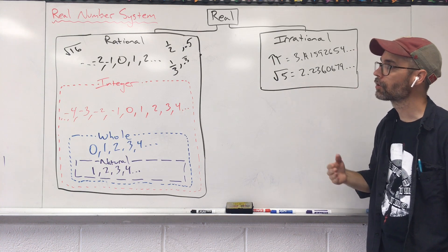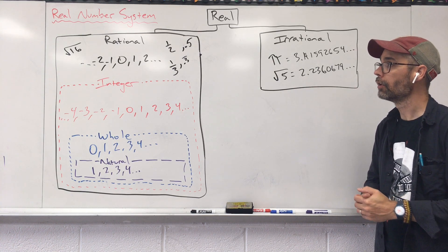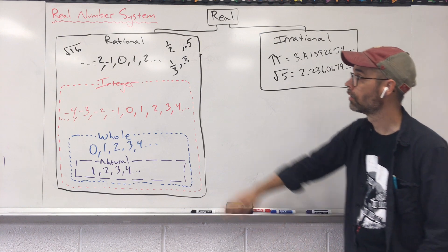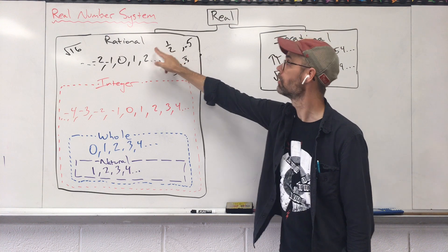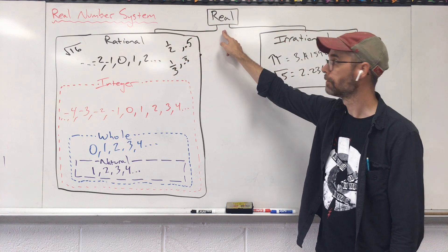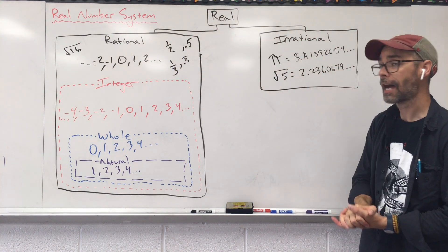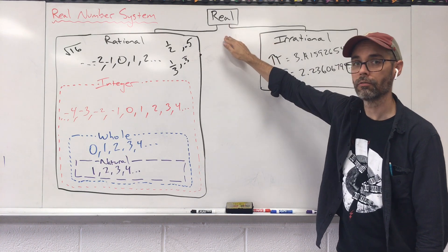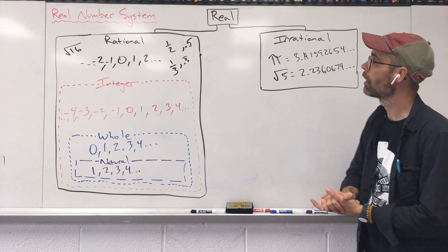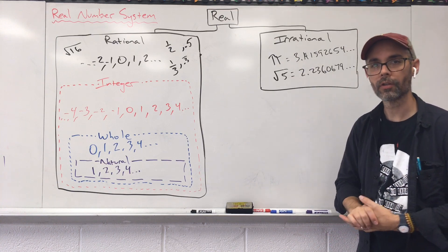If I were to ask what category does one half fall into, it's not down here, but one half is rational. It is also real. What categories does the number pi fall into? Irrational and real. That's categorizing numbers using the real number system.